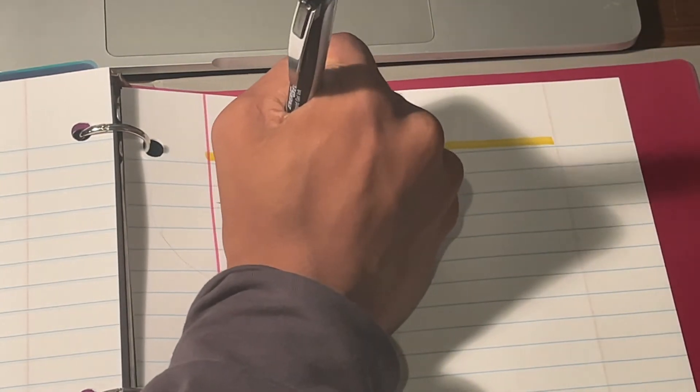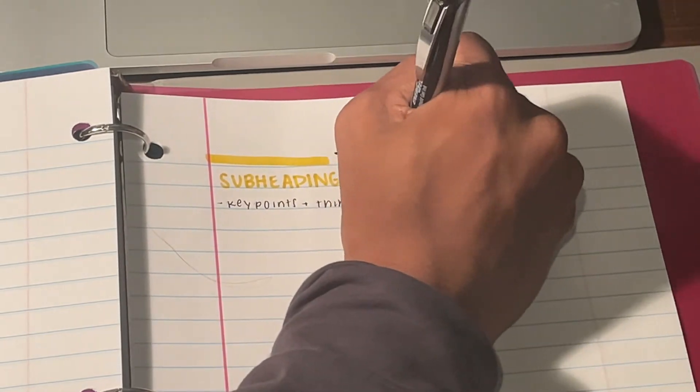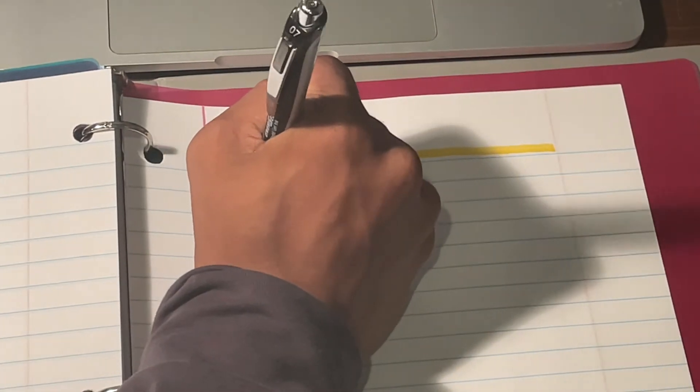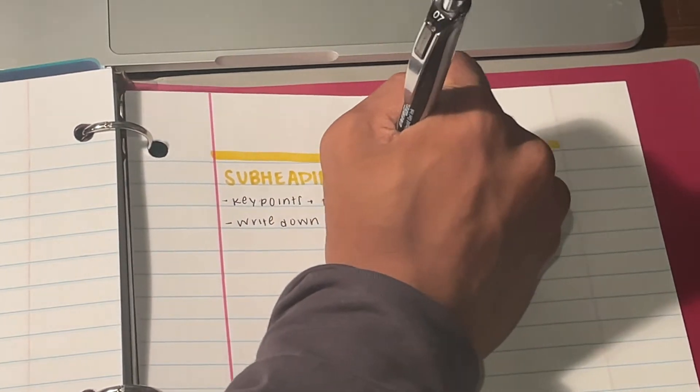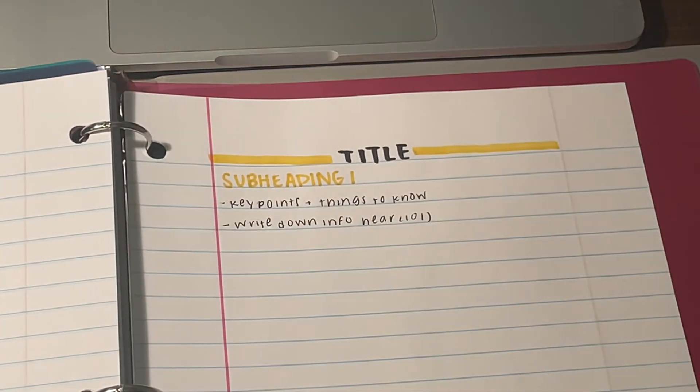Then, I use my black pen to write down key points and information that the teacher says during the lecture. I like to summarize or paraphrase the key points so that I'm not copying it down word for word.